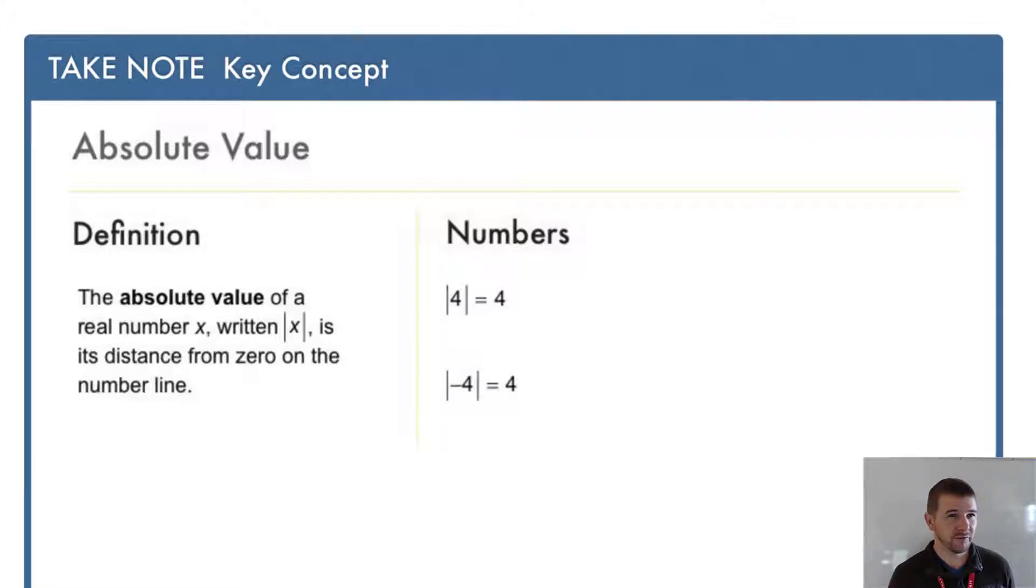With symbols, we can state: if x is greater than or equal to 0, the absolute value of x just equals x. On the other hand, if x is less than 0 (a negative number), then the absolute value of x equals the opposite of x.